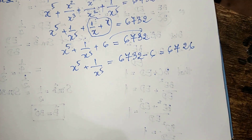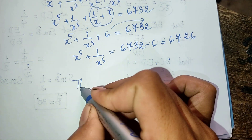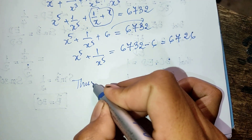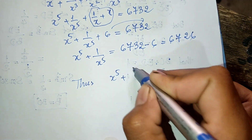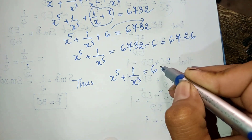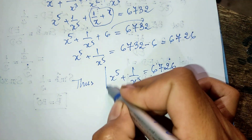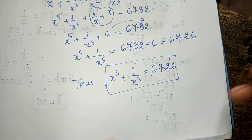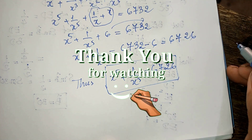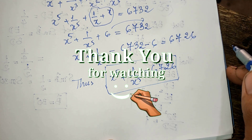So we have the value of h to the power five plus one divided by h to the power five equals 6726. That is our answer. Thank you for watching. If you like my videos, please don't forget to subscribe to my channel for more exciting videos. Goodbye.